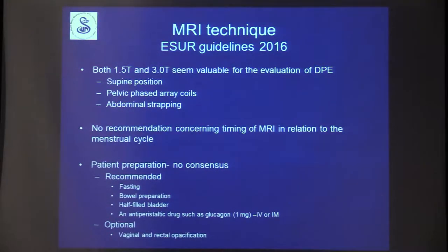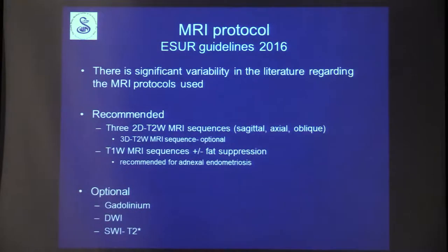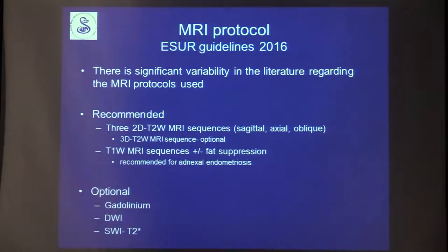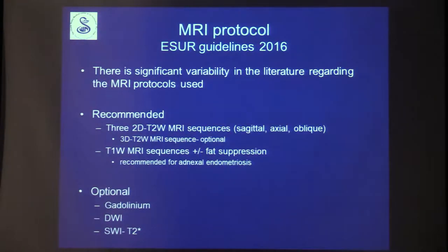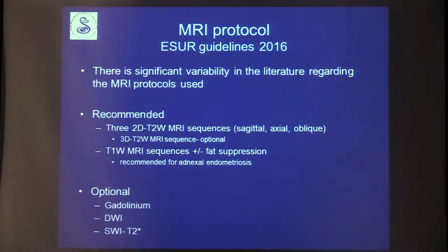You can optionally use vaginal or rectal opacification. Most people use three directions of 2D T2-weighted images — sagittal, axial, and coronal or coronal oblique — and T1-weighted images with and without fat suppression, which is recommended for adnexal endometriosis. Gadolinium, diffusion, and T2-star sequences can be used but are not necessary for endometriosis per se, mostly for differential diagnosis.